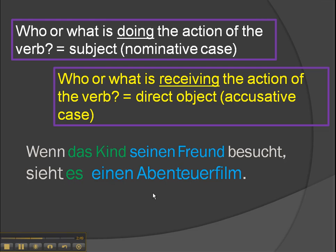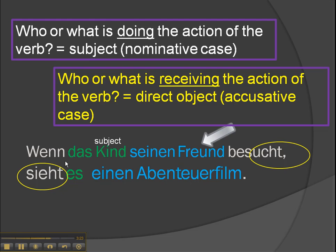And a final example where there are two clauses: 'Wenn das Kind seinen Freund besucht, sieht es einen Abenteuerfilm' — when the child visits his friend, he sees an adventure film. The verb in the first half is 'besucht.' Who or what is doing the visiting? That's the child — so the child is the subject. Who or what is he visiting? His friend — so the friend is the direct object. And here's our second verb, 'sieht.' Doing the seeing is 'es,' referring back to the child. What's it seeing? 'Einen Abenteuerfilm' — and therefore the direct object. And you can see here the masculine accusative forms that have changed. That's really all there is to it.